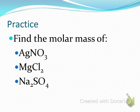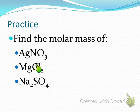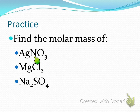Go ahead and find these on your own. Note that if there are no parentheses, the subscript only applies to the element directly in front of it. So without parentheses, the subscript only goes to that element right in front of it — meaning three oxygen atoms, but only one nitrogen atom.